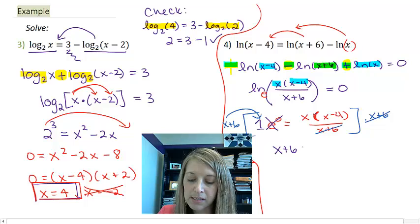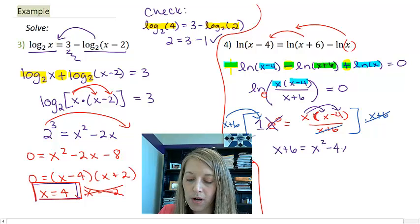When I have it over here on the left, I have x plus 6 equals, if I distribute this, x squared minus 4x.